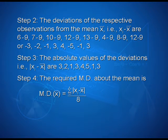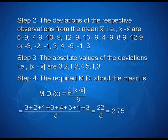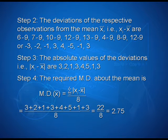In step 4, the required mean deviation about the mean is: MD(x̄) = (1/n) × Σ|xi − x̄| = (3 + 2 + 1 + 3 + 4 + 5 + 1 + 3) / 8 = 22 / 8 = 2.75.